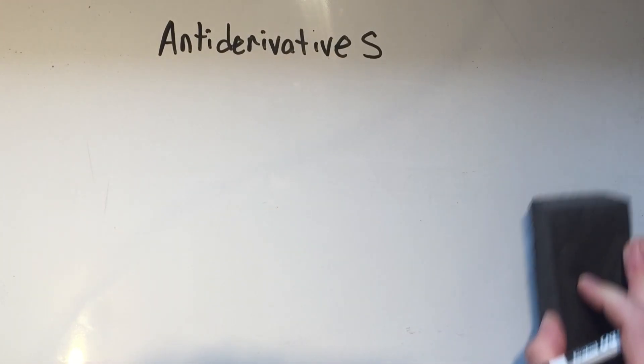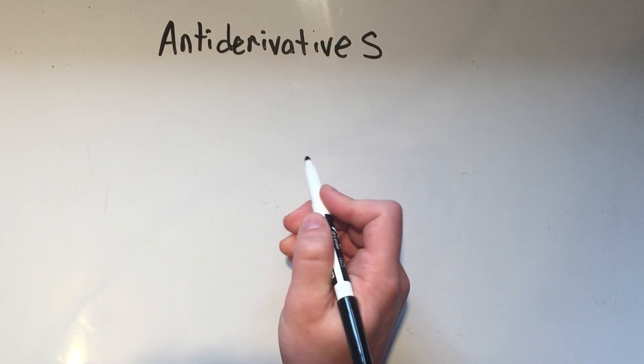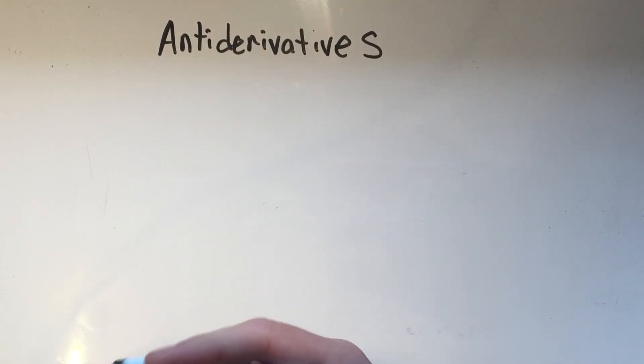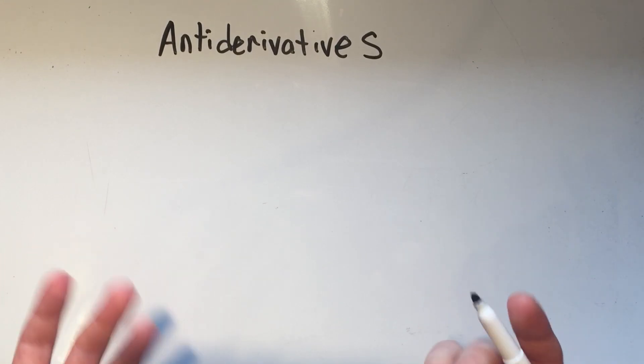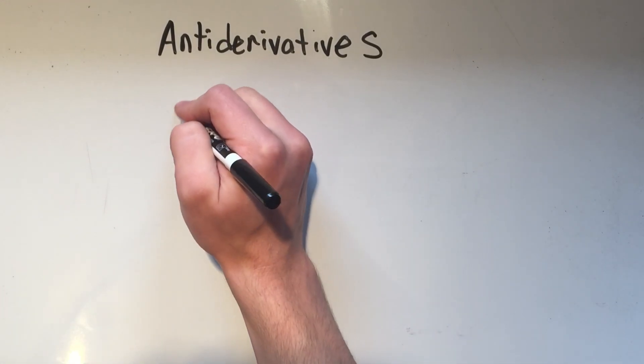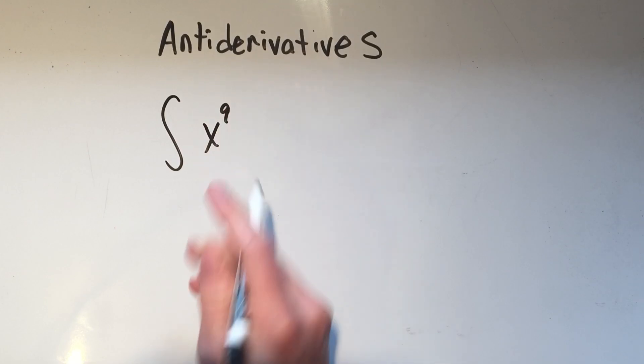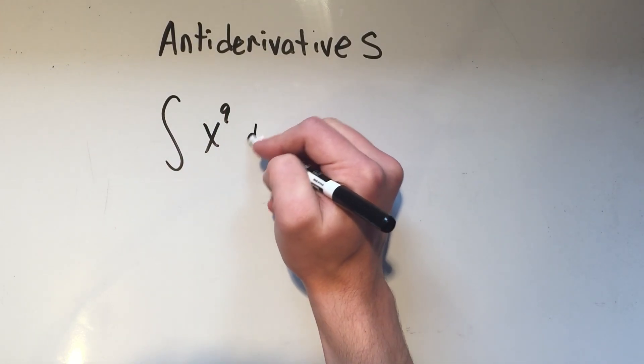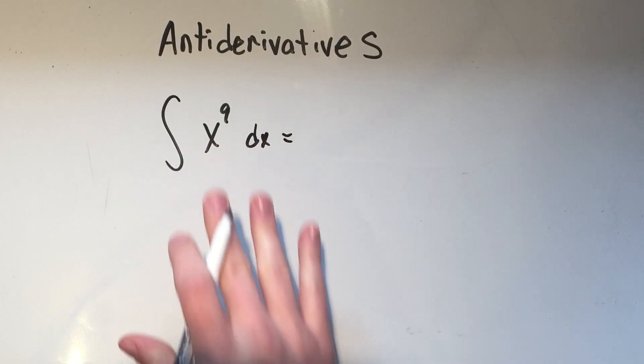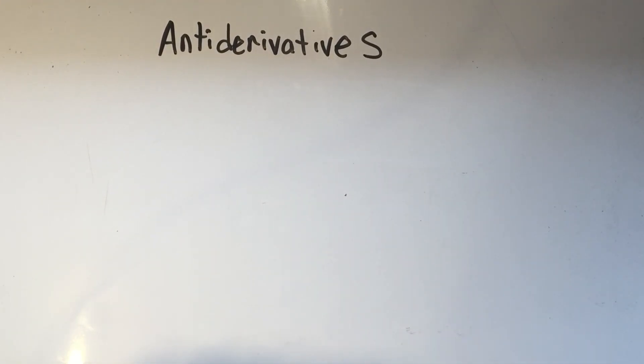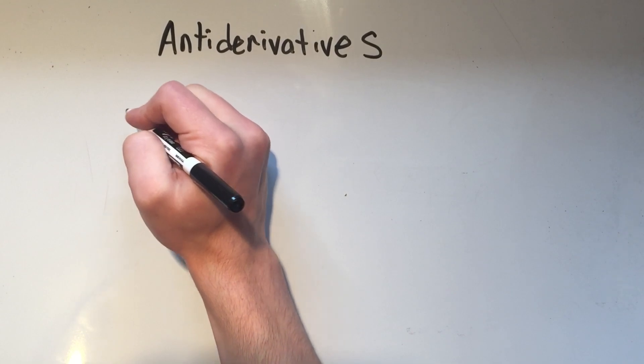We knew that the derivative of x squared was 2x, so the anti-derivative of 2x must have been x squared. But what if you didn't know off the top of your head? What if you had the anti-derivative of x to the ninth dx? Could you figure that out really quick? What can you take the derivative of to get x to the ninth? It's not so simple. But there is a formula.